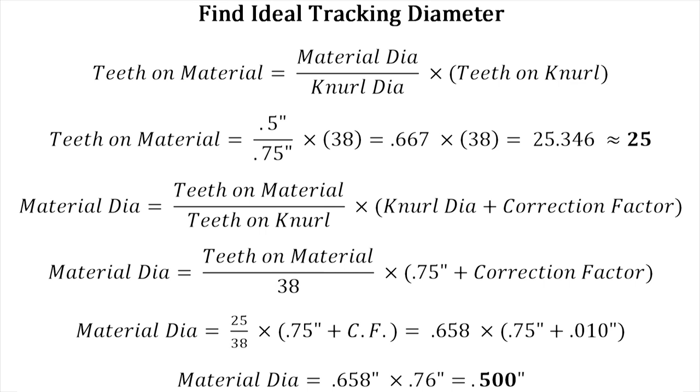Typically, people want to find an ideal tracking diameter for their material. This is because if you don't have an ideal tracking diameter, you're more likely to get cross-threading and just bad results in general. To do that, you need to calculate first the teeth on material. If you assume a half-inch aluminum, a half-inch diameter aluminum, for my tool three-quarters of an inch and 38 teeth, you come out to roughly 25 teeth on material.